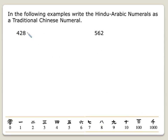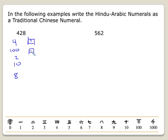If we wanted to write 428, we think of it as 4 times 100 plus 2 times 10 plus 8. We transfer this to Chinese numerals: here's your 4, here's your 100, here's 2 times 10, and then 8. So here's your number 428.